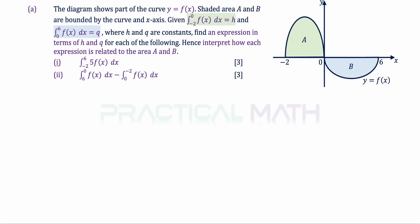In part A, we are given that the integral of f(x) dx from -2 to 0 equals h, represented by shaded area A highlighted in green. And the integral of f(x) dx from 0 to 6 equals q, represented by shaded area B highlighted in blue.